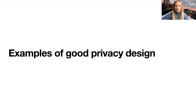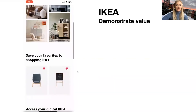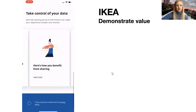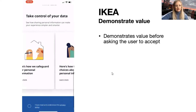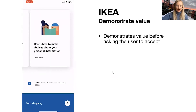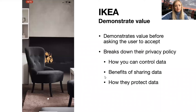I wanted to share some examples of what I consider to be good privacy design. This one is from IKEA. When you first join the IKEA app, they show you a bit of what the app has — you can save favorites, access inspiration and your IKEA card — demonstrating value before asking the user to accept terms and conditions. They also break down their privacy policy into articles about how you can control your data, benefits of sharing data, and how they protect your data — easy to access without digging through a full privacy policy.